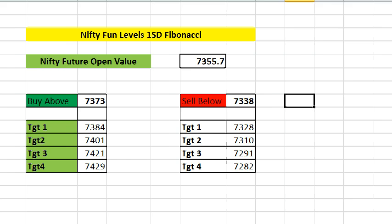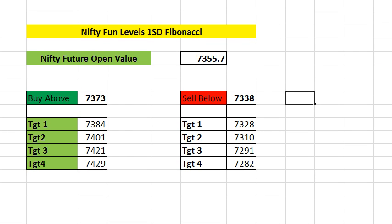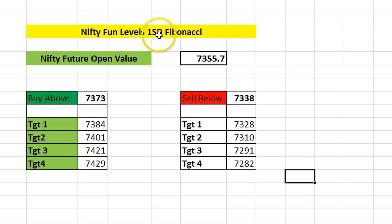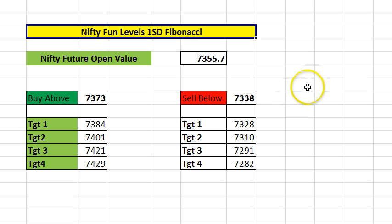This Excel sheet started in our trading group because of a trader named Om Swaroop, and I'll be giving him credits in this video. At the top it says 'Nifty Fun Levels 1 SD' — one SD means one percent standard deviation, again based on Fibonacci levels.